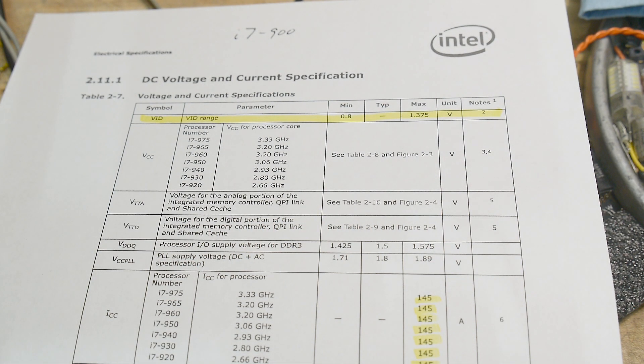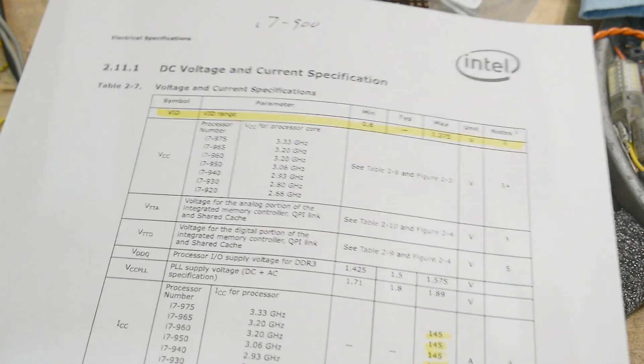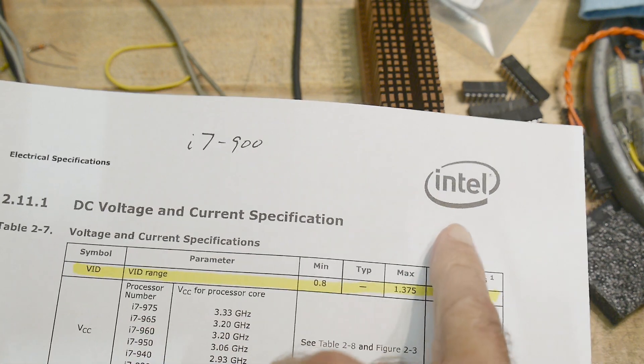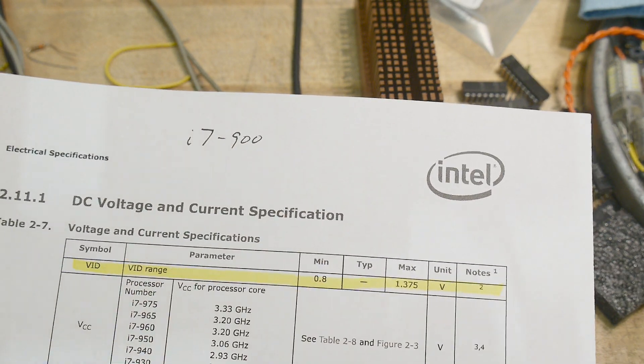So you ever wonder why your microprocessor in your computer needs such a big heat sink? Why does it get so darn hot? Let's look at a datasheet here. This is for the i7 processor. That's an Intel i7. This is the dash 900 version.